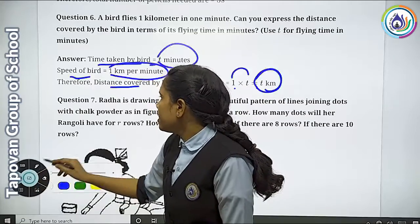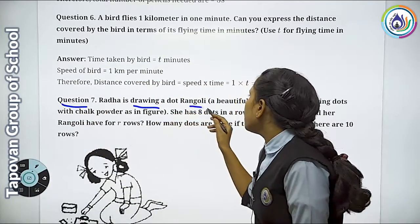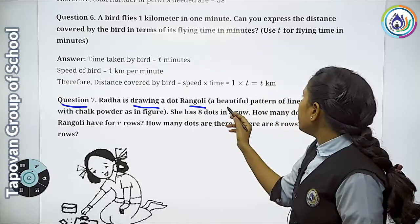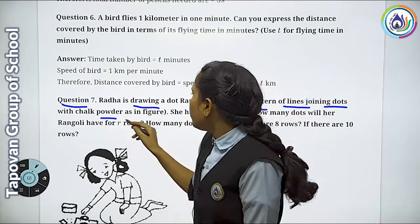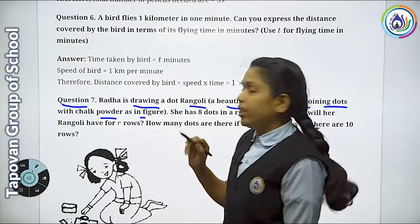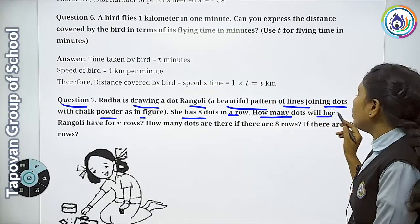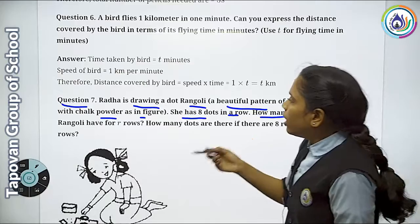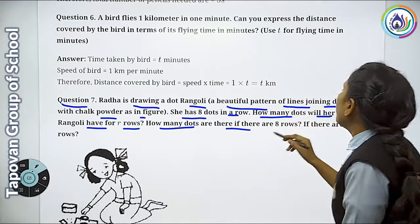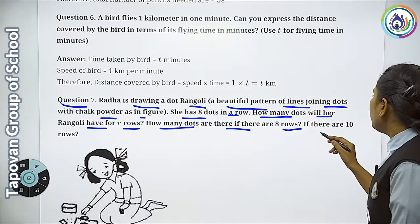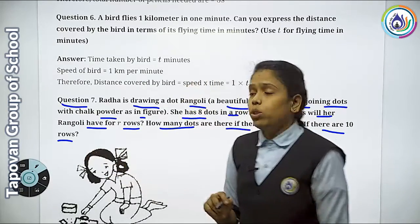Next, Question No. 7: Radha is drawing a dot rangoli — a beautiful pattern of lines joining the dots with chalk powder as shown in the figure. She has 8 dots in a row. How many dots will her rangoli have for R rows? How many dots are there if there are 8 rows? If there are 10 rows?